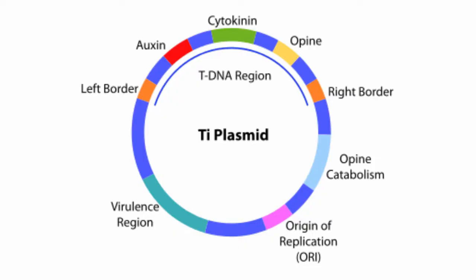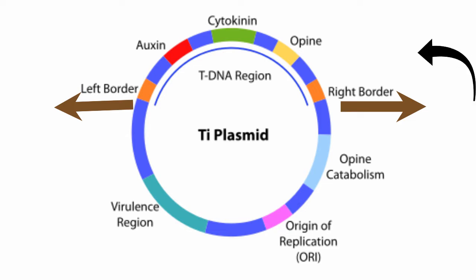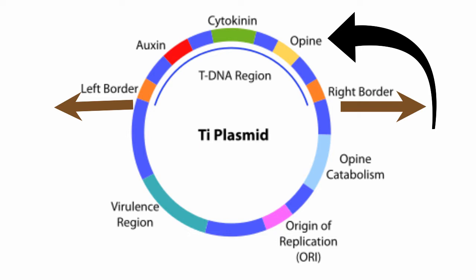This is the general structure of the Ti plasmid, which starts from the right border and ends at the left border. This plasmid contains genes synthesizing opines and phytohormones, which are the source of nitrogen and energy. Cytokinin promotes cell division and auxin promotes stem elongation.